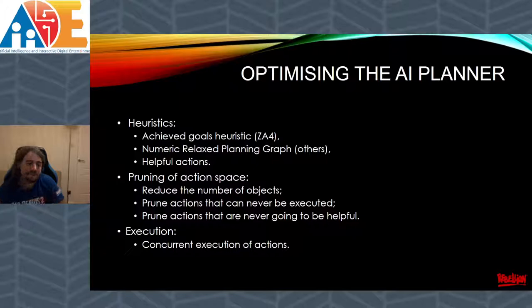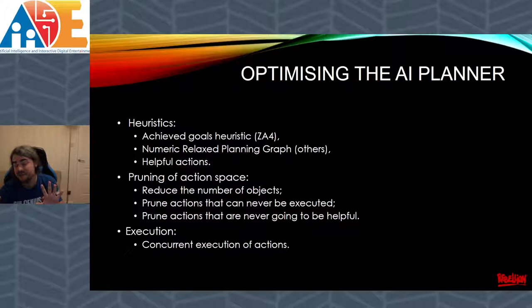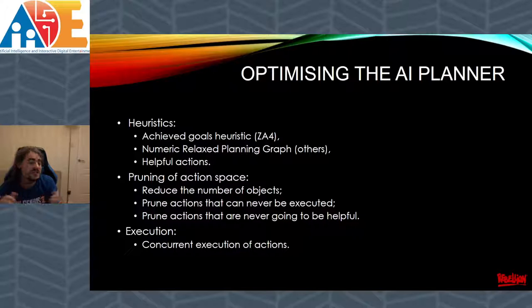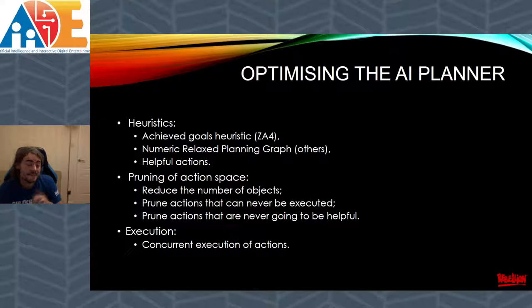For heuristics: in Zombie Army 4 we could get away with a very simple one called the Achieve Goals Heuristic — given a state, you count the number of achieved goals and subtract from the total number of goals to achieve, giving an estimated distance from the goal. It's mainly a symmetry-breaking device: rather than the planner deliberating between killing zombie one or zombie two first, this heuristic says just kill the zombies and get going. But for the more complex Evil Genius 2, we need a more advanced heuristic: the numeric relaxed planning graph heuristic, where you relax the planning problem such that when you execute actions you don't delete anything — you just add facts — and for numeric facts you track upper and lower bounds of where numbers can get to.